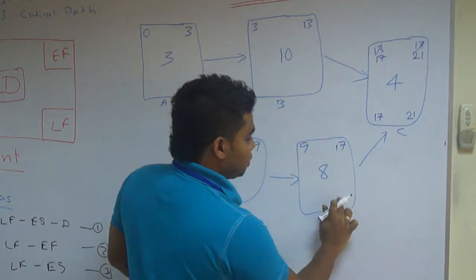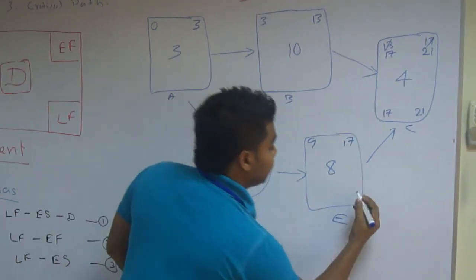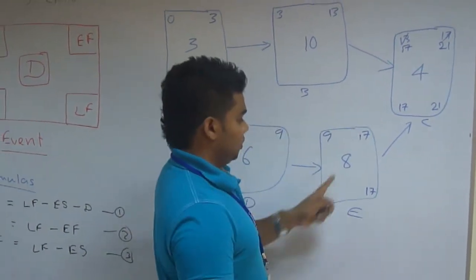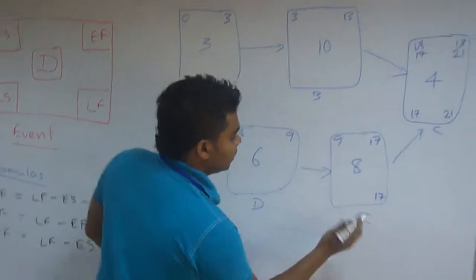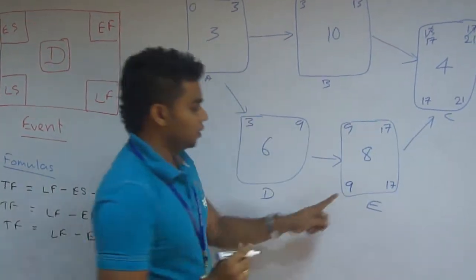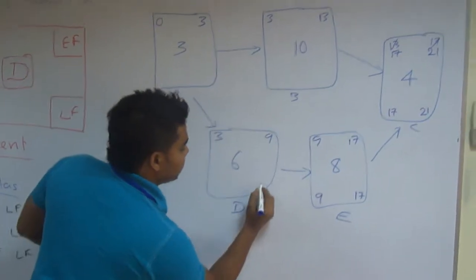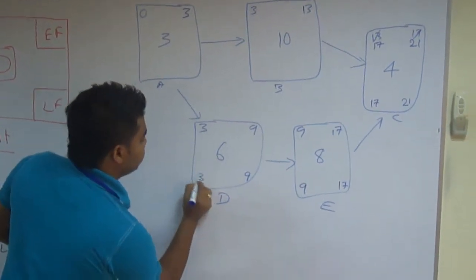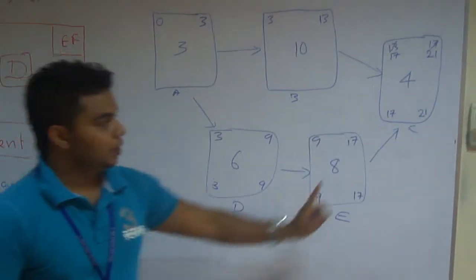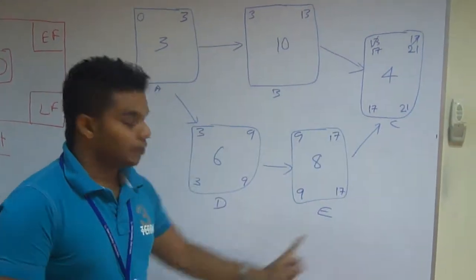That means we can finish. We have to finish event E at seventeen. So we will start nine. How I get it? Seventeen minus eight is nine. That means I finish nine here. I finish three. Okay. Now we have completed our forward pass and backward pass.